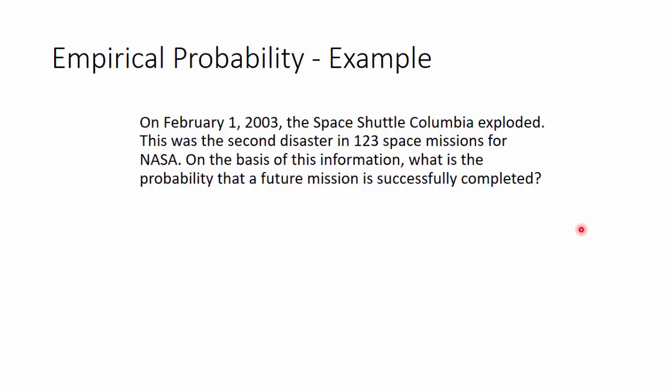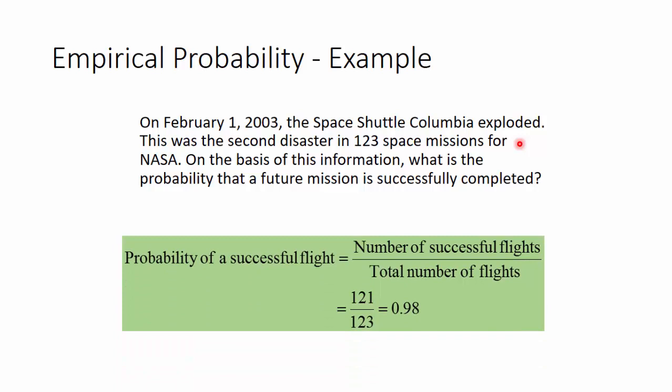Now based on this information that has been collected, what is the chance that the next mission would be a success? There were 123 missions that had happened, of which two failed. So 121 of them were a success. The probability of success is the number of successful flights we have had over the total number of flights that have been done. So that's 121 successful flights over 123 total flights. That's about 98% chance that the next flight would be a success.